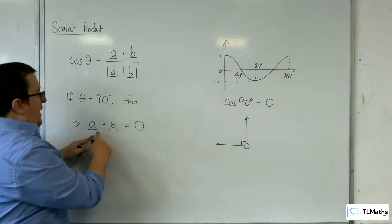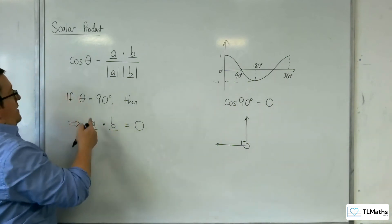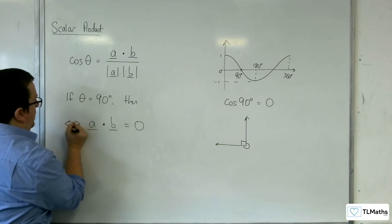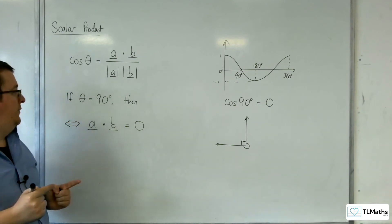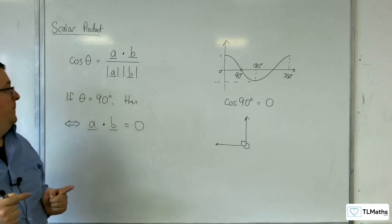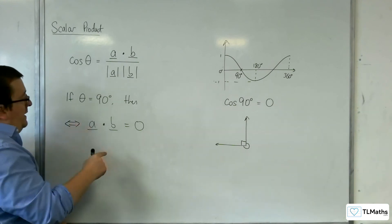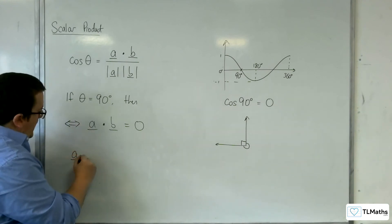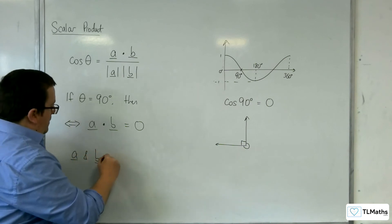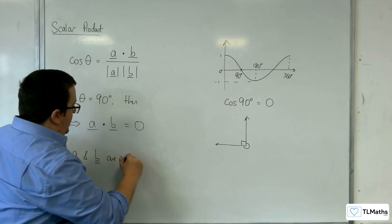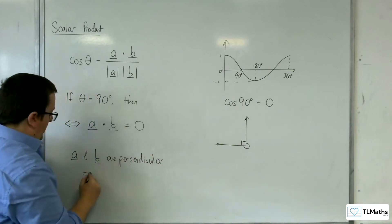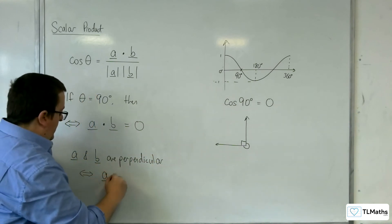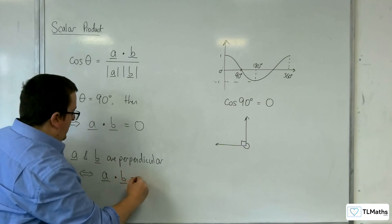So essentially, if a dot b is equal to 0, then theta is 90 degrees. And so this is an if and only if statement. It works both ways. It is a logical equivalence. This means that a and b are perpendicular, so they are at right angles, if and only if a dot b is equal to 0.